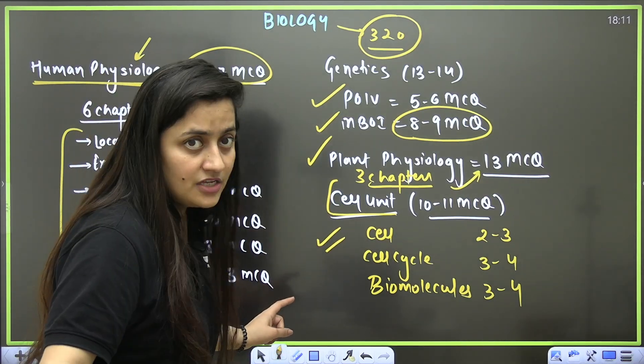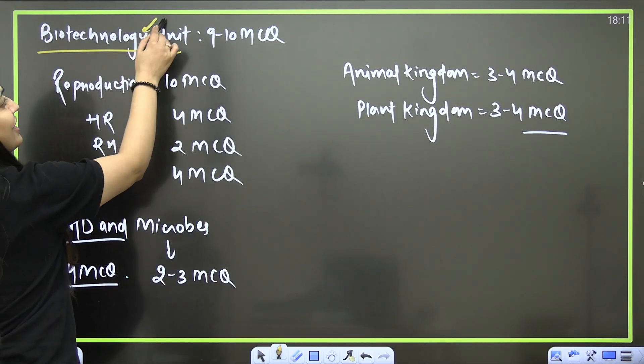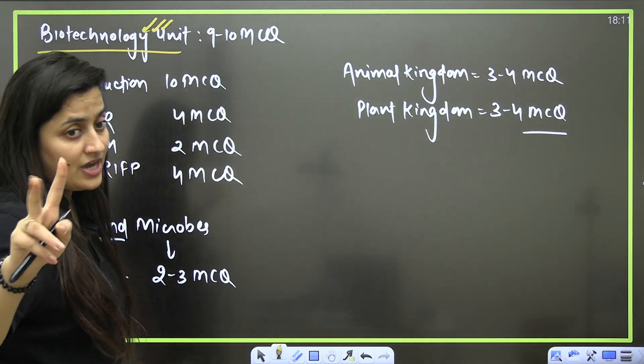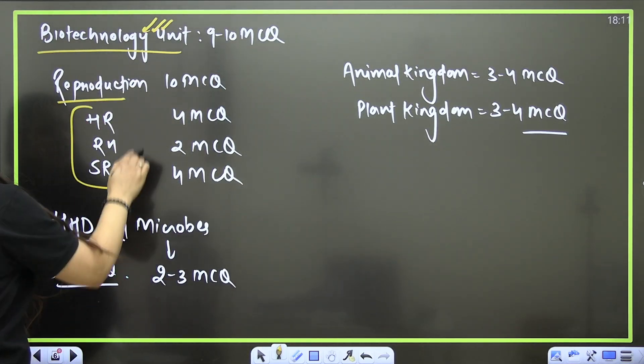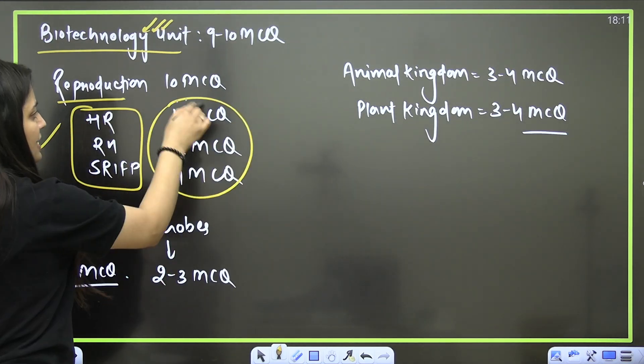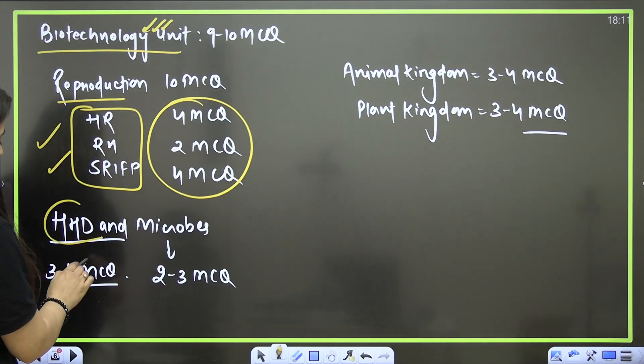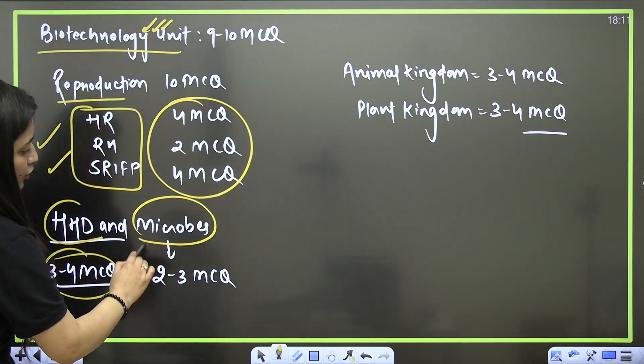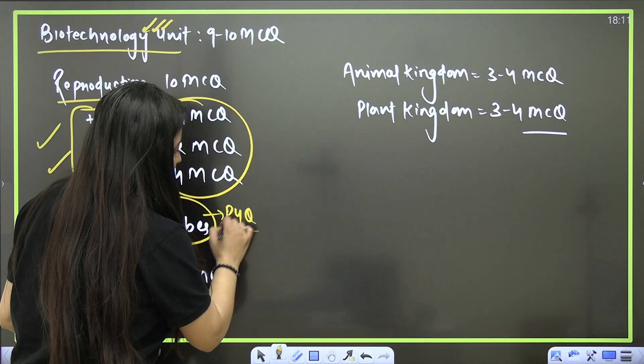Next part, biotechnology—very easy. You can complete these two chapters in a day. Nine to ten MCQs can come. Reproduction—the complete unit is easy again, 10 MCQs. You need two to three days to master this particular unit. Human health and disease—three to four MCQs. Microbes—two to three MCQs. Here you can just complete last 10 years PYQs. That will be more than sufficient for this particular chapter.